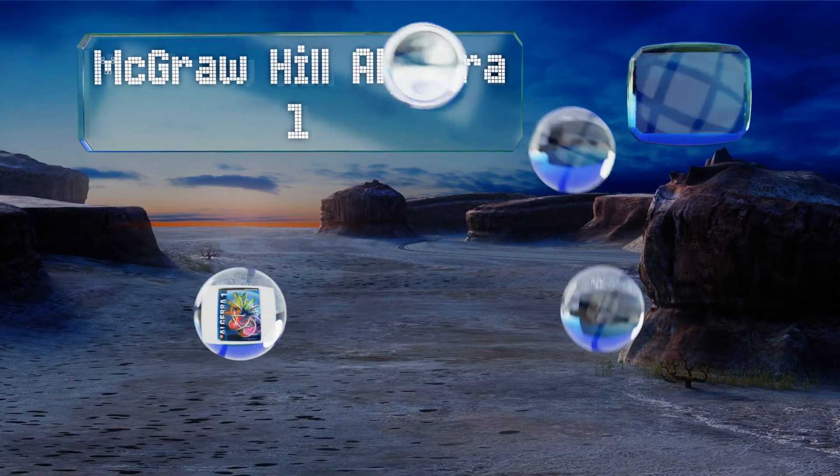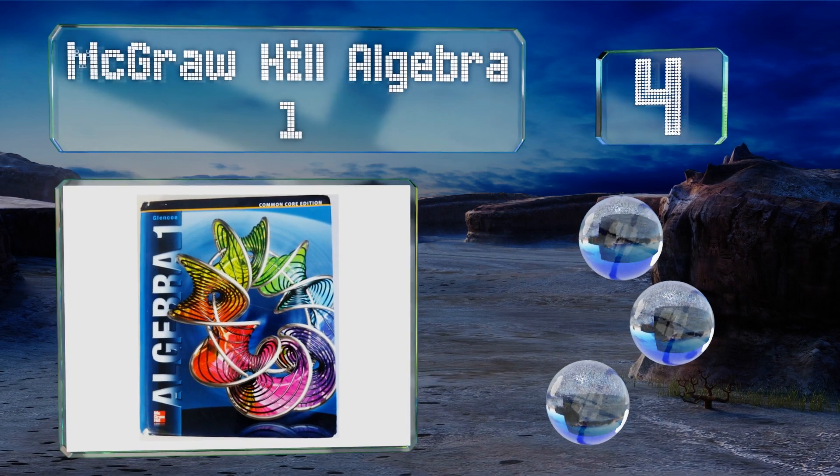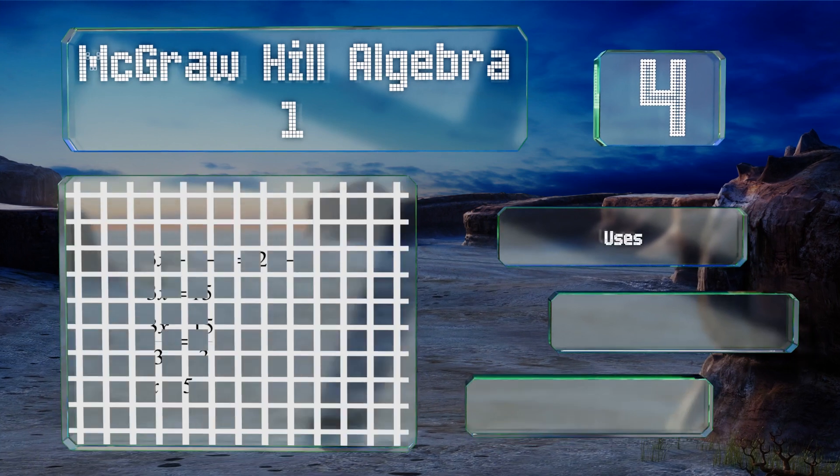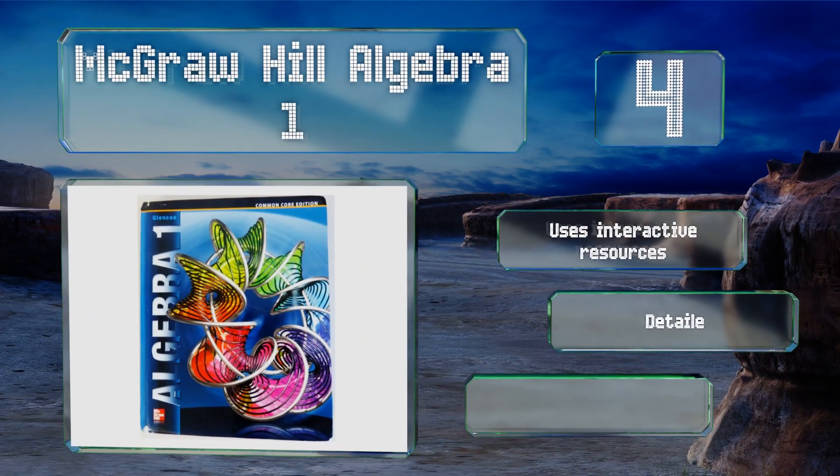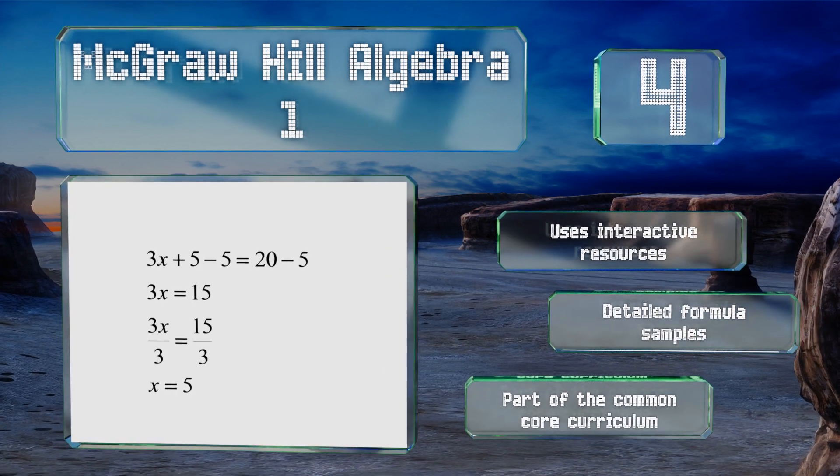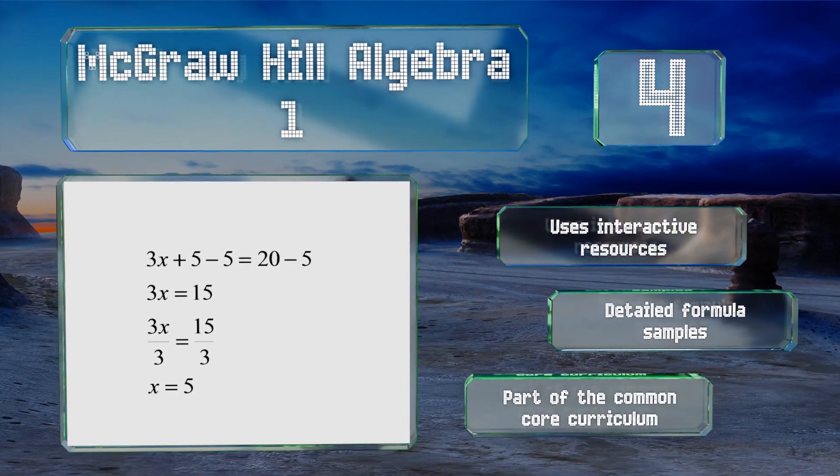At number four, McGraw Hill Algebra One provides comprehensive coverage of the subject, introduces concepts and skills, and offers opportunities to practice and reinforce what has already been learned. It's good for homeschooling, tutoring, and the classroom. It uses interactive resources and features detailed formula samples as part of the Common Core curriculum.